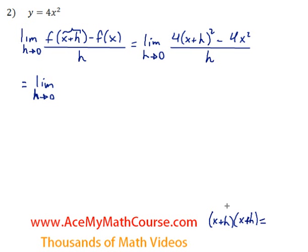Now let me FOIL this. x times x is x squared. x times h is xh. h times x is xh plus h squared, which is h times h. Now I can combine the middle terms and I will get x squared plus 2xh plus h squared.